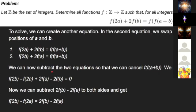We get f(2b) - f(2a) + 2f(a) - 2f(b) = 0. Now we can subtract 2f(b) - 2f(a) to both sides and get f(2b) - f(2a) = 2f(b) - 2f(a).